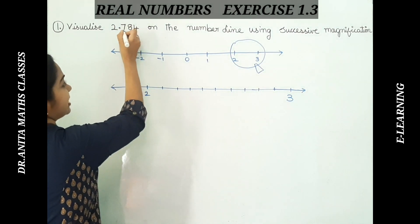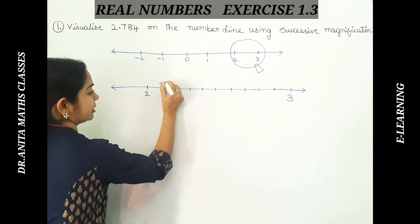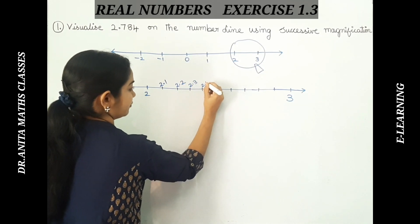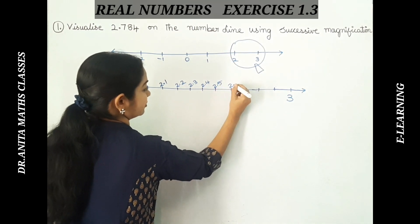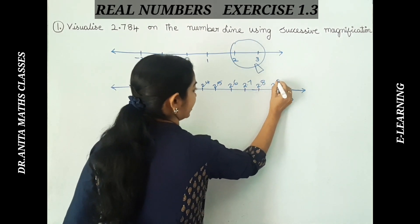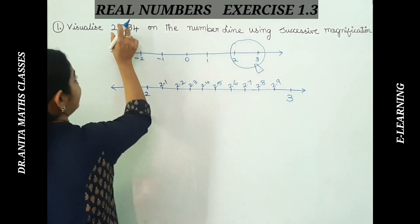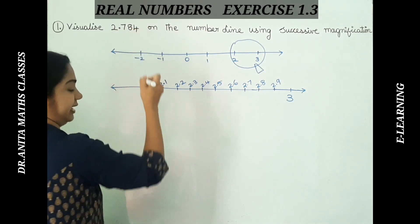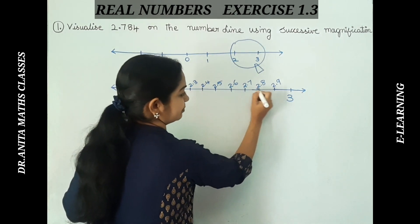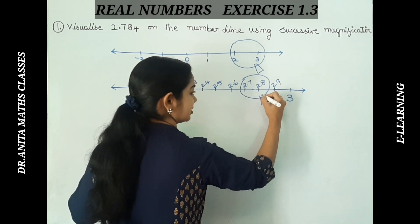Now the 10 parts between 2 and 3 are labeled: 2.1, 2.2, 2.3, 2.4, 2.5, 2.6, 2.7, 2.8, 2.9, and 3.0. Since 2.784 has first decimal digit 7, it lies after 2.7 and below 2.8. So I place the magnifying glass between 2.7 and 2.8 and zoom in on that part.